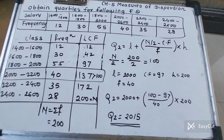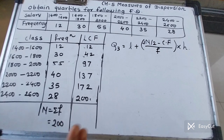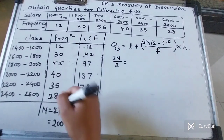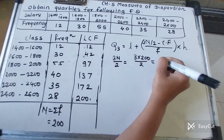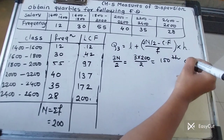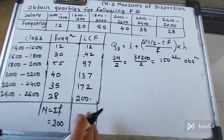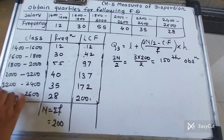Q2 is also the median — just follow the steps of median. Now for Q3, the formula is: L + (3N/4 − cf) / f × h. First find 3N/4 = 3 × 200 / 4 = 150. So we look for the 150th observation.